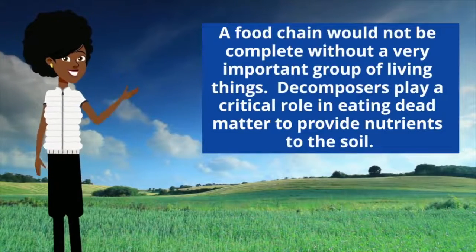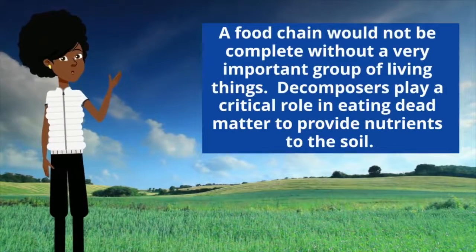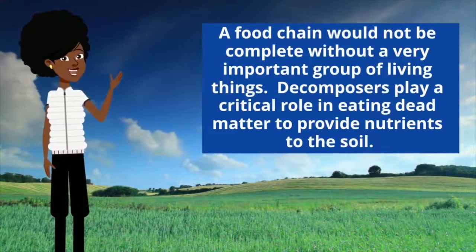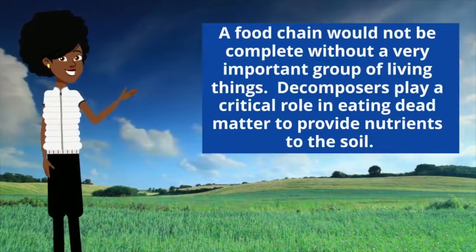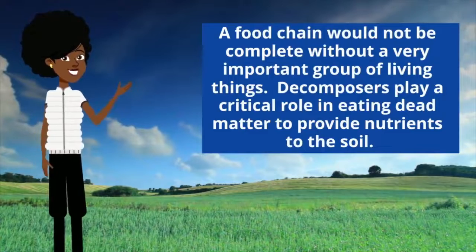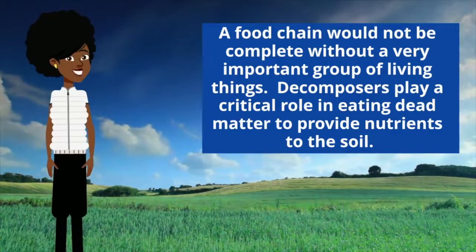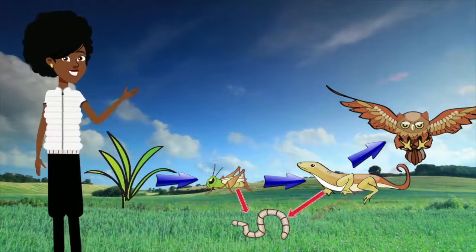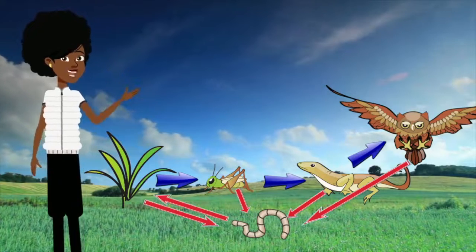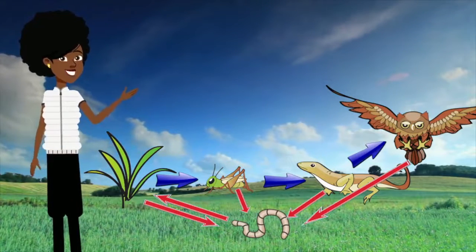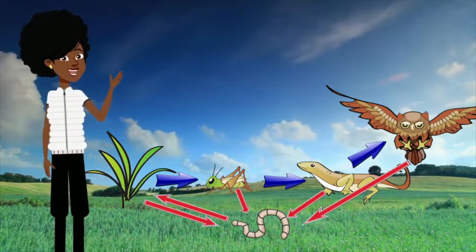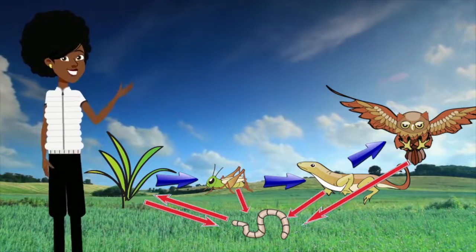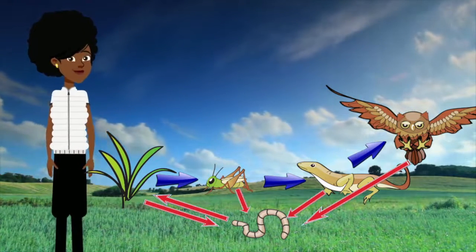A food chain would not be complete without a very important group of living things. Decomposers play a critical role in eating dead matter to provide nutrients to the soil. This shows just a simple food chain of producers, consumers, and decomposers. However, the world itself is much more complex, and that's where a food web comes in.